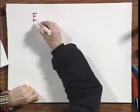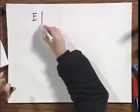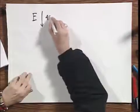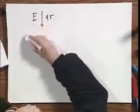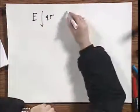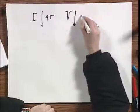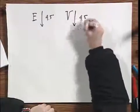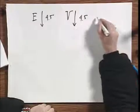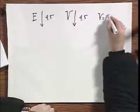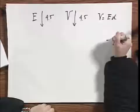the E field, this is my shorthand notation, because of the dielectric, is four and a half times lower than what it would have been if the dielectric hadn't been here. Therefore, the potential difference over the plates is four and a half times lower, because, remember, the potential difference is simply E times d, and d is not changing.